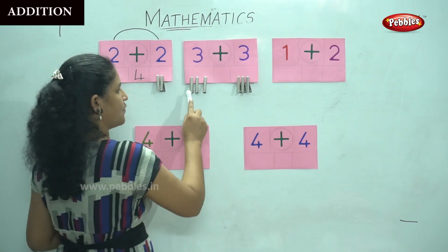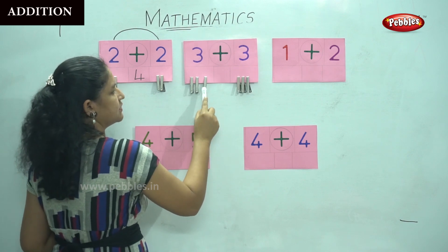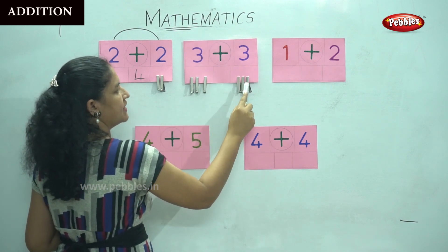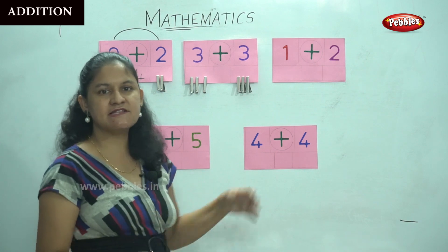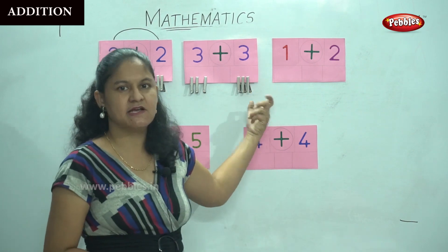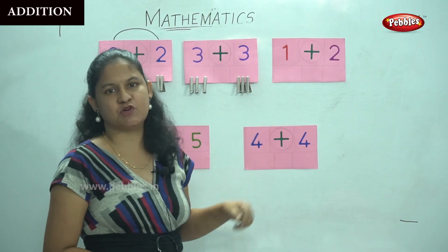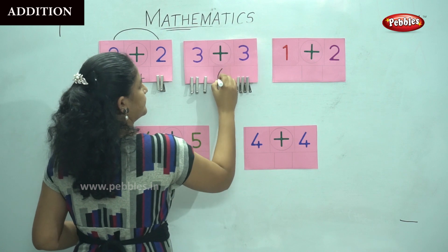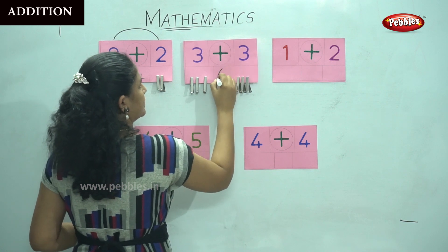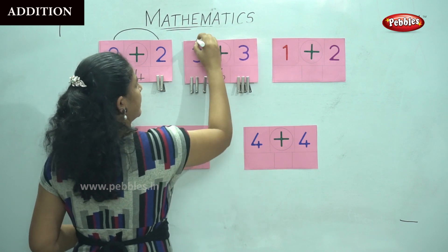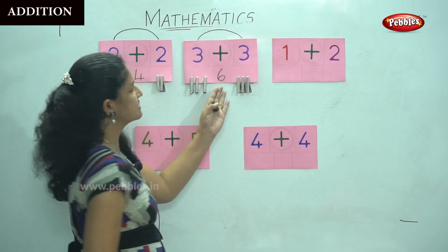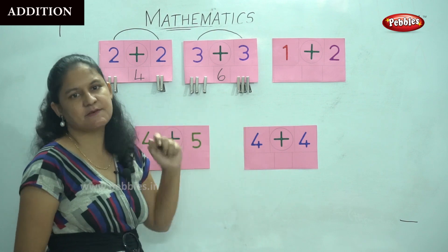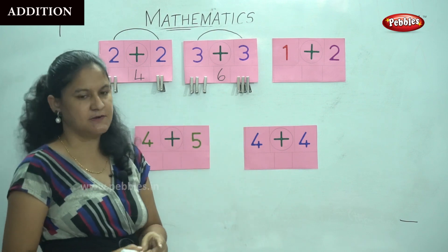So it is one, two, three, four, five, six. I have six pegs clipped onto this chart. Three plus three gives me six.